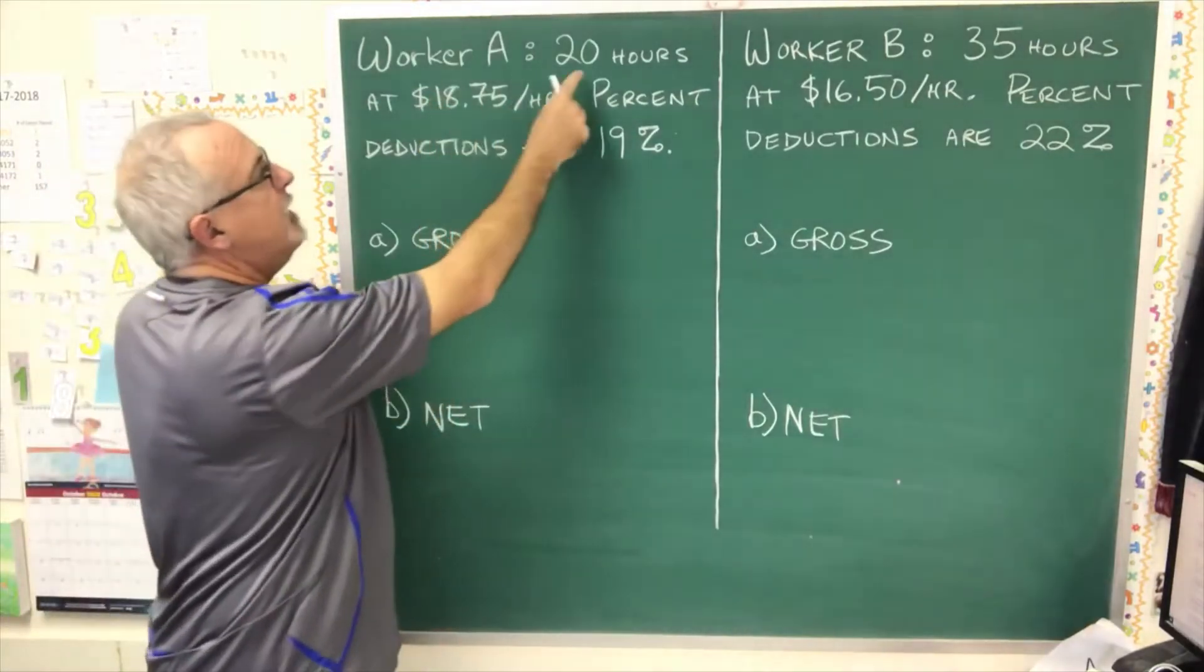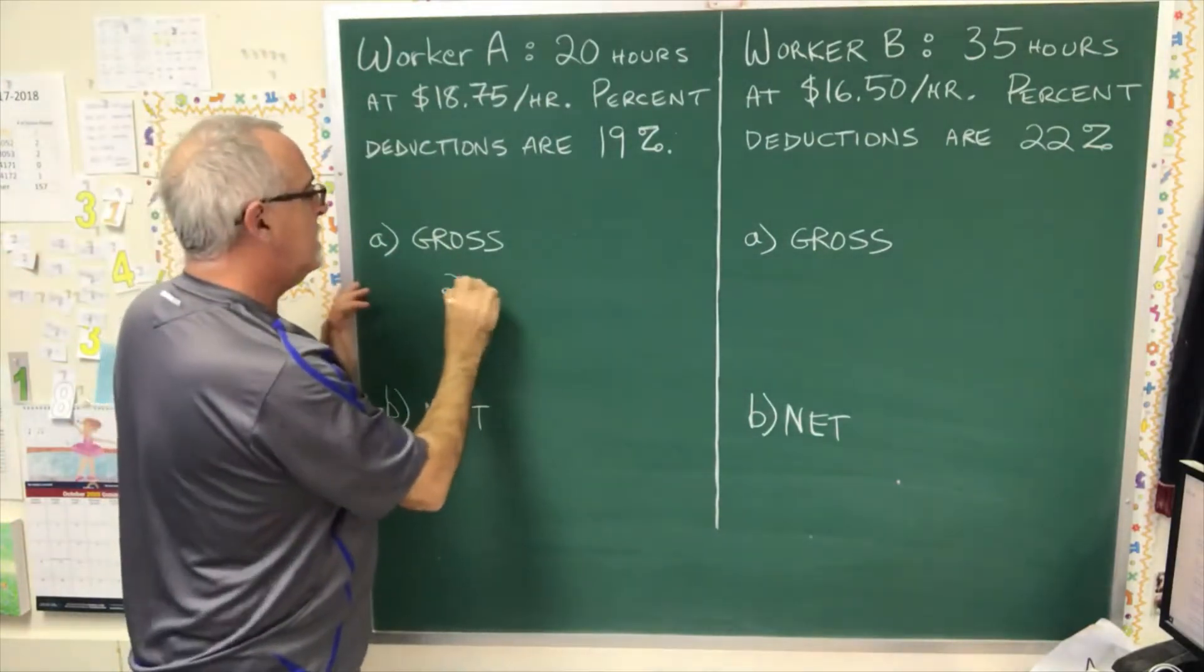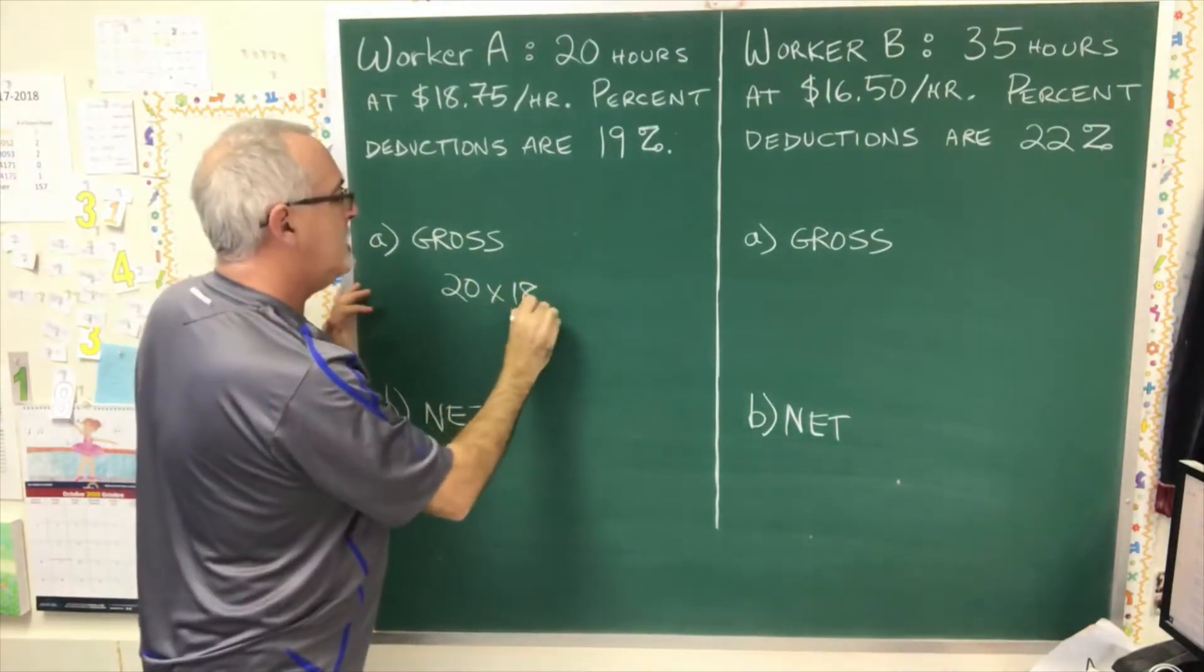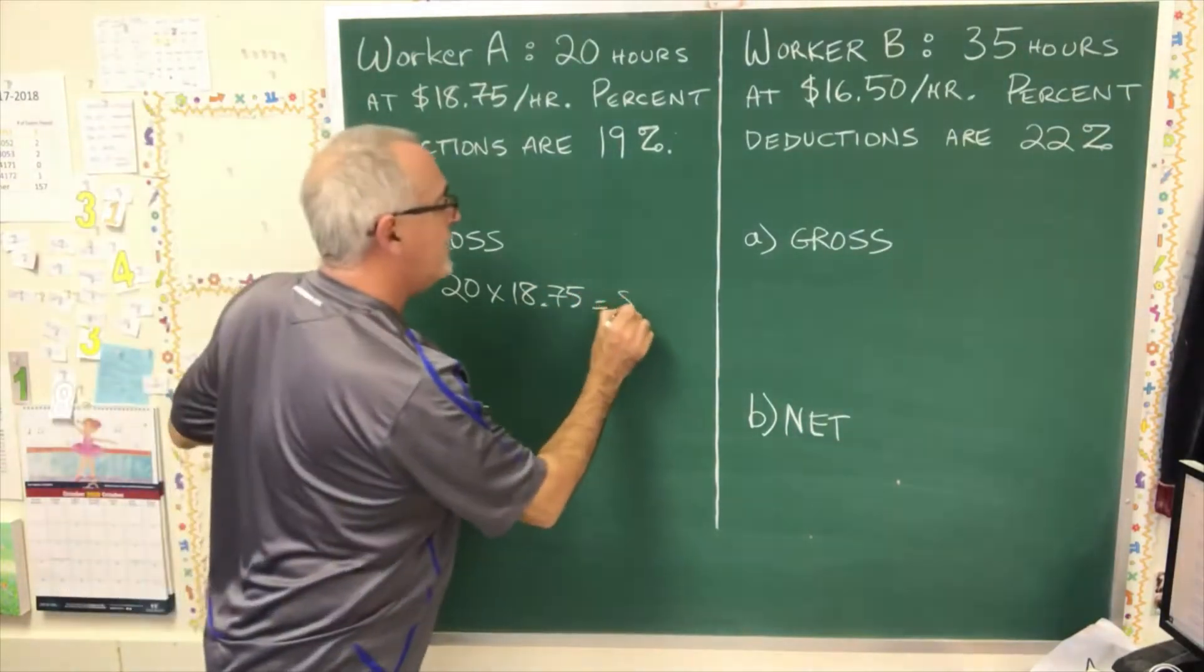For worker A, 20 hours were worked at $18.75 an hour, so we're going 20 times $18.75. That gives us $375.